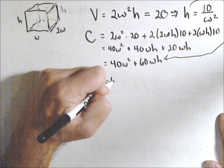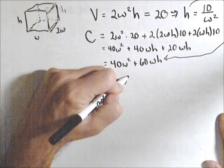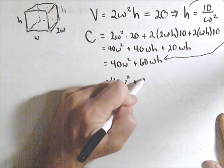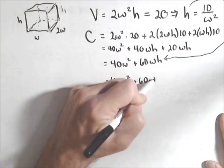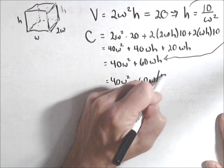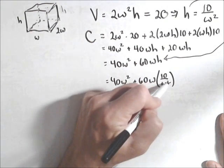So I have my cost function. I haven't done any calculus yet. We're just going to do a substitution here. 60wh times 10 over w squared.